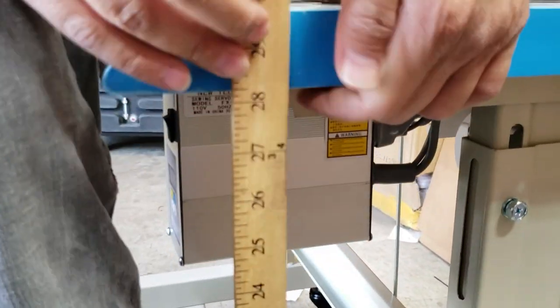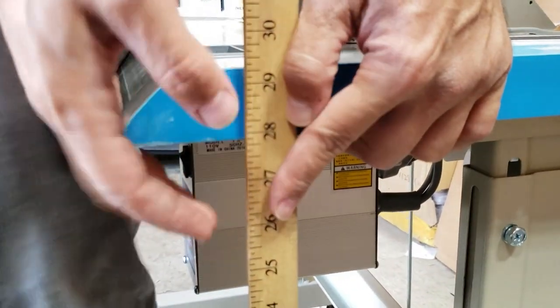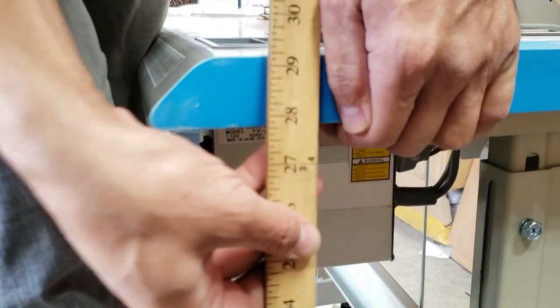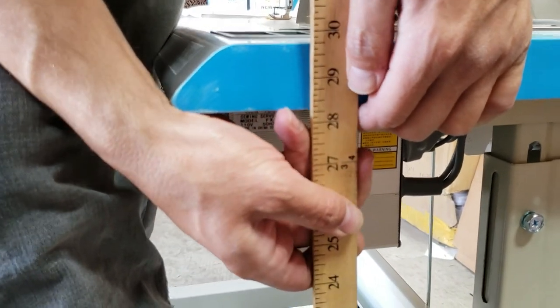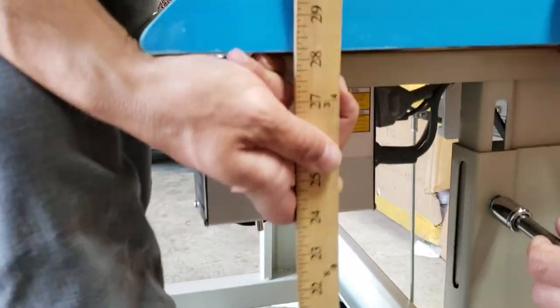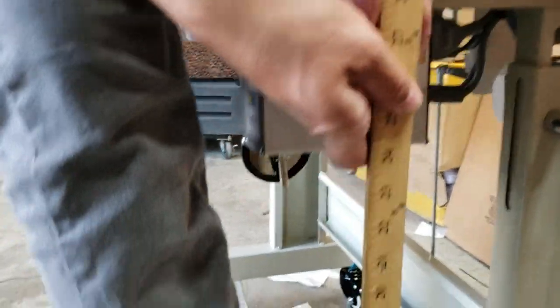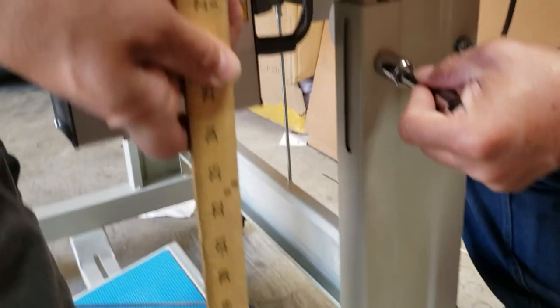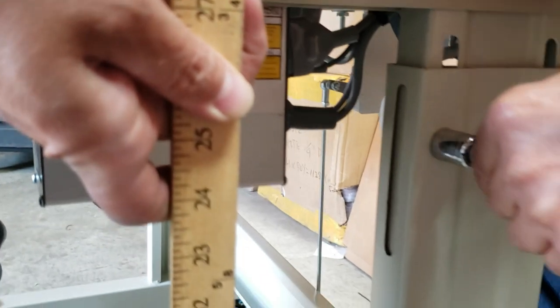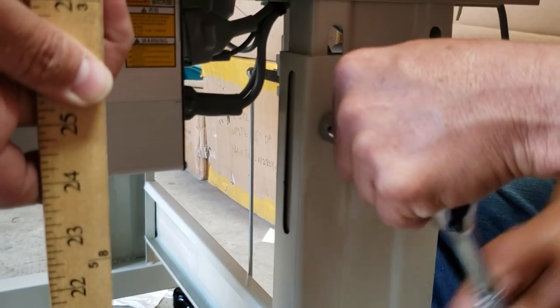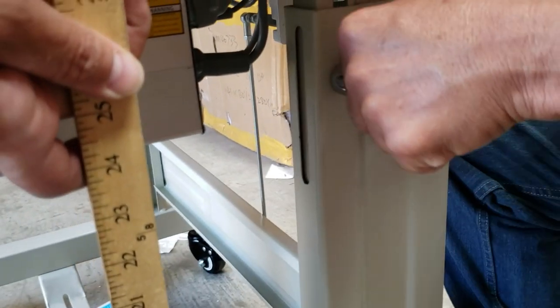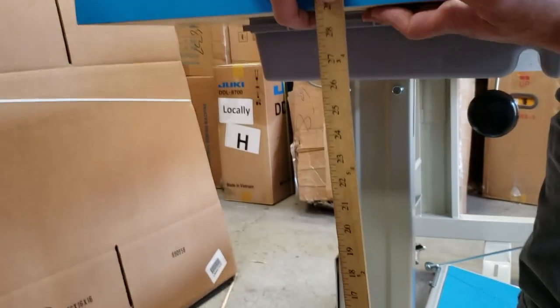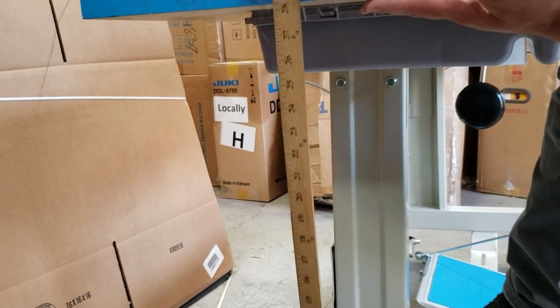Alright, here we go. Now we take it all the way down and we're going to take it up. Usually it has to be 29 and a half from the bottom. And just tighten both ends, this side and that side, and do the same on the other side.